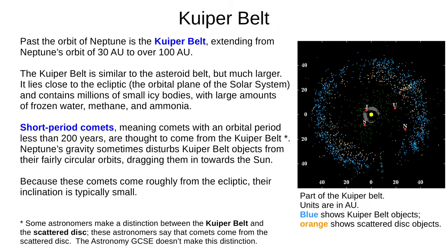Finally today, we'll look at the distant solar system. Beyond Neptune's orbit lies the Kuiper belt, extending from 30 AU to over 100 AU. The Kuiper belt is similar to the asteroid belt but much larger — it lies close to the ecliptic and contains millions of small icy bodies, with lots of frozen water, methane, and ammonia. Short period comets, with orbital periods less than 200 years, come from here. Kuiper belt objects usually have fairly circular orbits, but sometimes Neptune's gravity disturbs them, pulling them in towards the Sun. Short period comets come from the ecliptic or close to it, so their inclination is typically small.